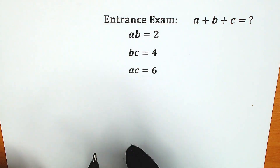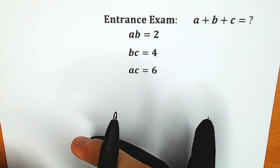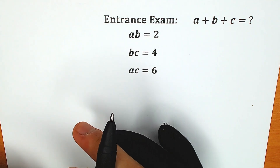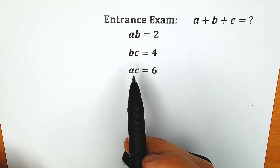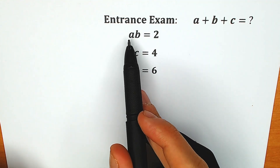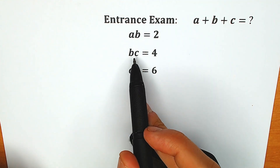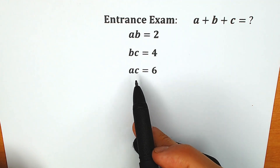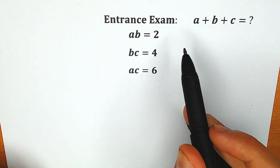Hello everyone, happy to see you here. Welcome back to my channel Hiya Mathematics. Today we have a very interesting and tricky question from an entrance examination. We know that a times b equals 2, b times c equals 4, and a times c equals 6.